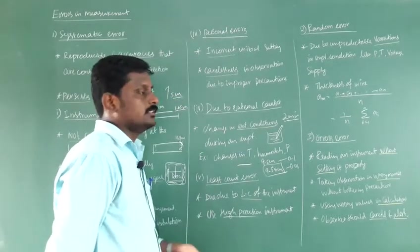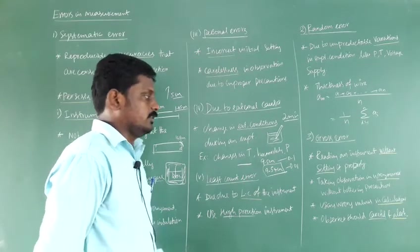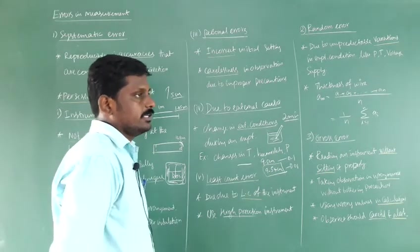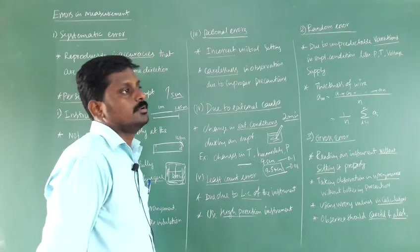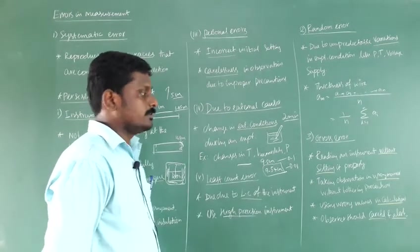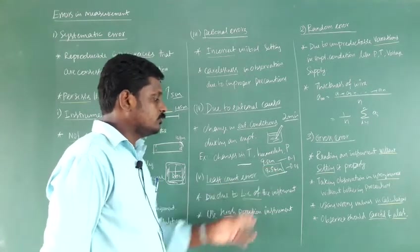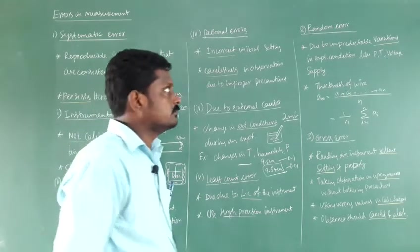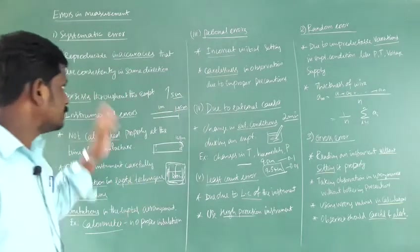The next sub-type is least count error — the error due to the least count of the instrument. For example, measuring something with a scale gives 9.5 centimeters, but measuring the same thing with a vernier caliper gives 9.54 centimeters. The result varies due to the least count, so you need to choose a high-precision instrument to reduce the least count error. These five sub-types together constitute systematic error.